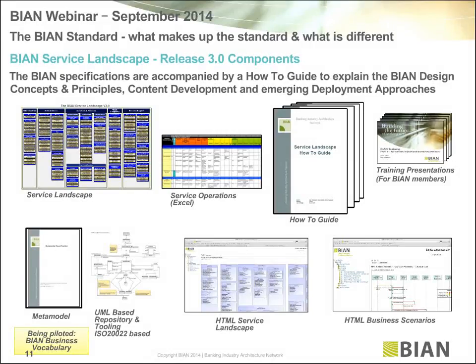So what actually is in the BIAN standard? On page 11, a release contains the service landscape itself, which has about 280 service domains — the discrete service center capabilities. The standard goes down to the service operations that connect those service domains together. There's a comprehensive set of how-to guides — actually three documents — and everything we're going through today short of the cloud content is documented in the how-to guide, which you can download for free from buyin.org.